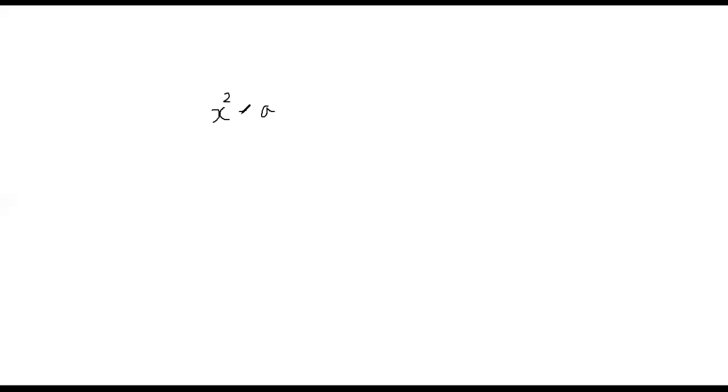Hi, welcome back to this video series on quadratic residues. In this segment I'm going to talk about how we can find the square root of a number in a composite group. More precisely, suppose we are given a number a and we need to find a number x such that x squared equals a — this is basically the definition of square root but in mod n. We will be dealing with the composite group Z*_n.